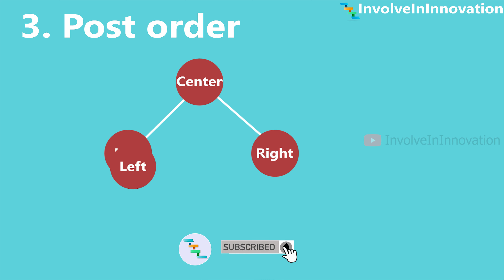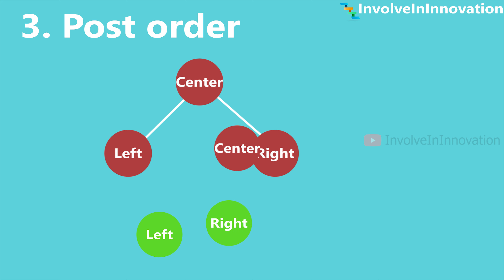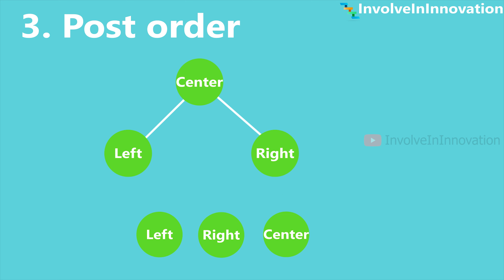Now we will see about post-order tree traversal. Traverse left, then traverse right, and finally visit the center node. The order is left, right, and center. This is applicable even to the subtree: first visit all the nodes in the left subtree, then all the nodes in the right subtree, followed by the root node.